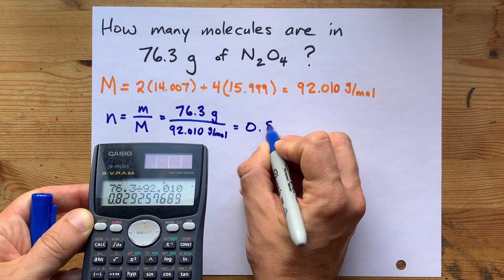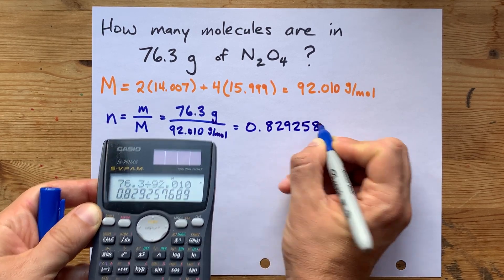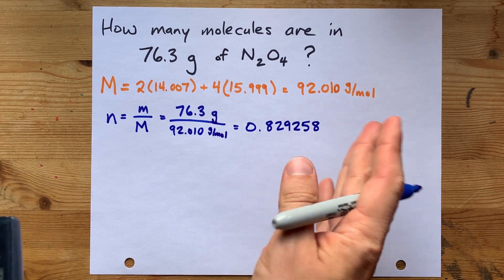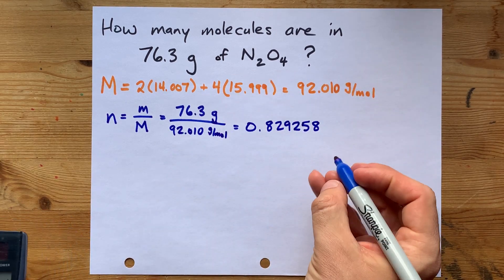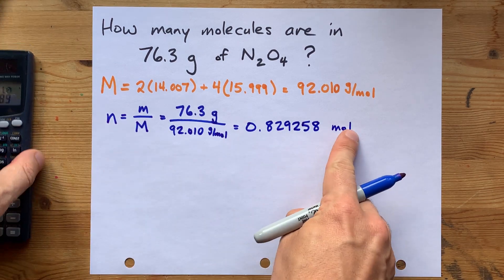I'm going to do 76.3 divided by 92.010. When I get that number, it's 0.829258-ish. I'm just carrying a bunch of decimal places, and I'm going to round it at the very end. This is a number of moles. See, little n measured in moles.